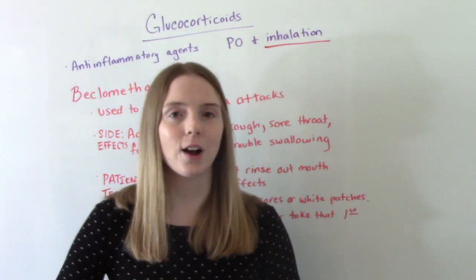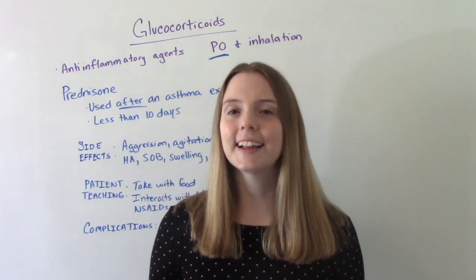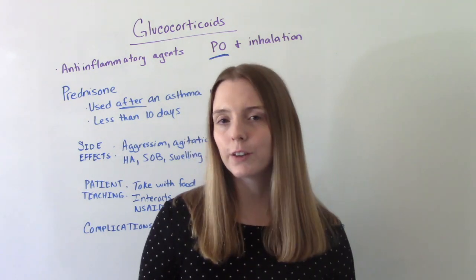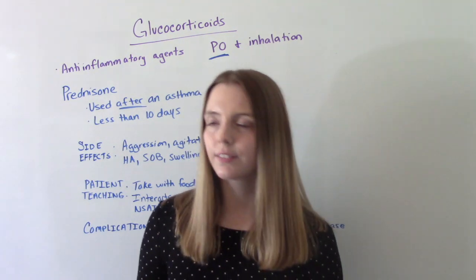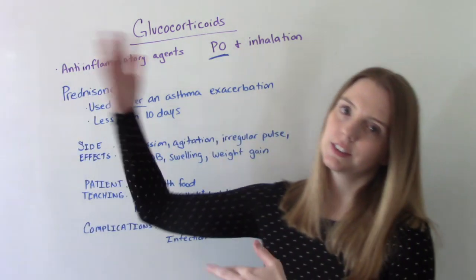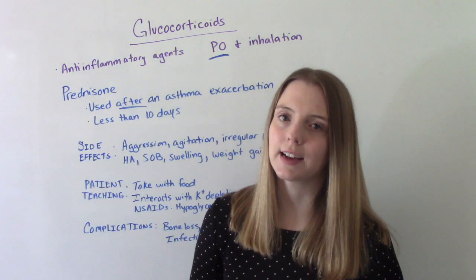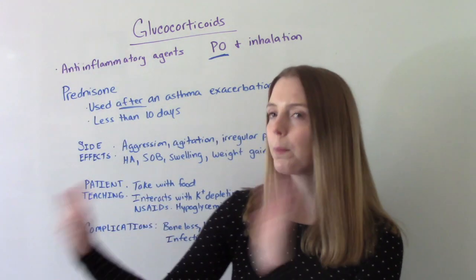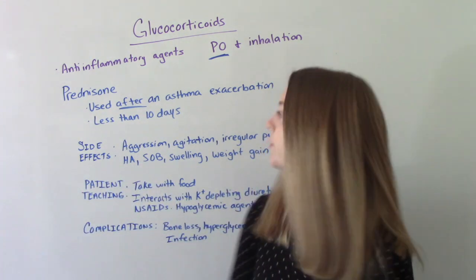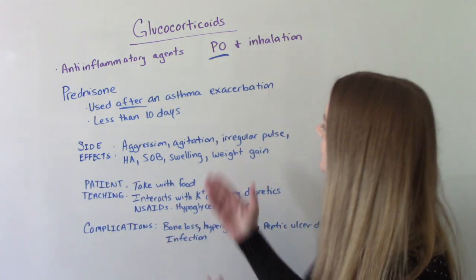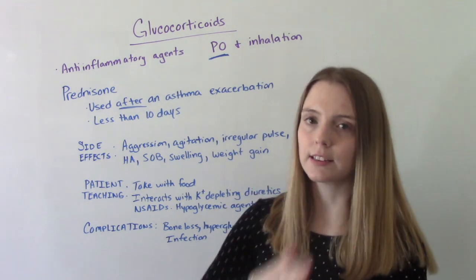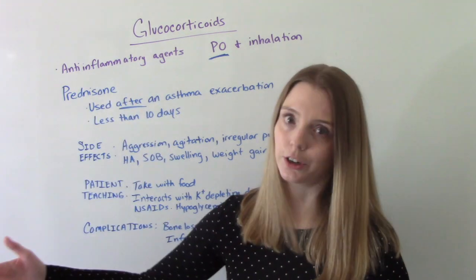Now let's talk about the oral route — prednisone. This is the drug of choice to be given orally. It's used after somebody's had an asthma exacerbation. So not before, not during — it's used after. And it's usually given for less than 10 days, so this is not something that somebody's going to be on long term.